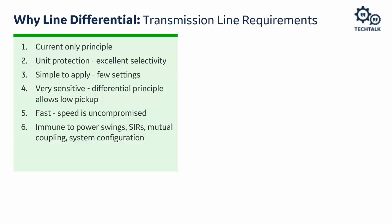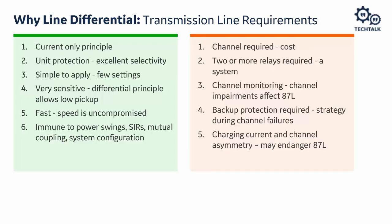However, there are some disadvantages. We need a communication channel — an additional cost. We need two or more relays; it's a system that cannot work on its own. We need channel monitoring because channel impairments will affect 87L. We need backup protection when the channel fails. And there are unique challenges that only exist for 87L: channel asymmetry and charging current.